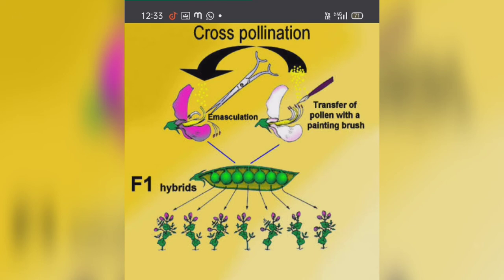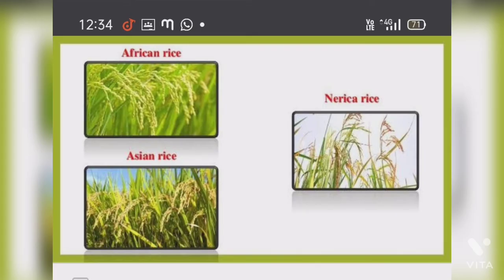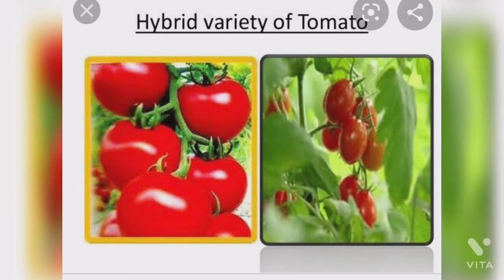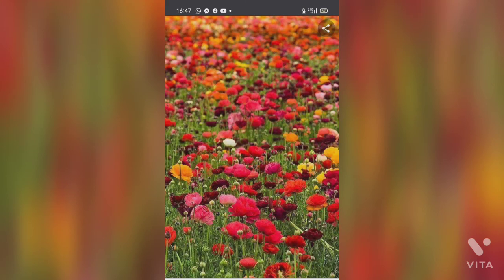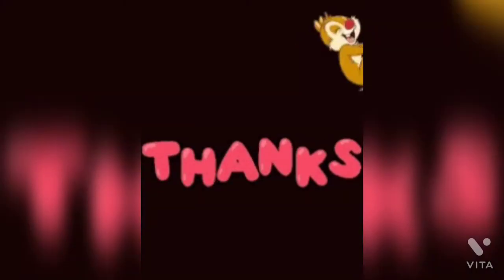Plant breeding is a technique through which scientists control the reproduction in plants to get the desired offspring. In this context, we will learn about hybridization — a technique used for developing new varieties of crops by cross-breeding two different varieties. The new variety contains the desired characteristics of both the parents. This is all about Chapter 1. Happy learning, students!